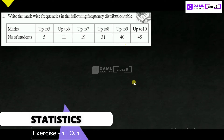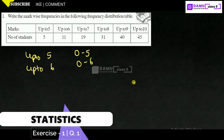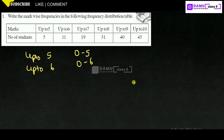In this module we are going to discuss our first question: write the mark-wise frequencies in the following frequency distribution table. We are given marks and number of students. Marks are given as up to 5, up to 6, and up to 7. The number of students given are 5, 11, 19, and 31 for those respective marks. We need to prepare the frequency distribution table.